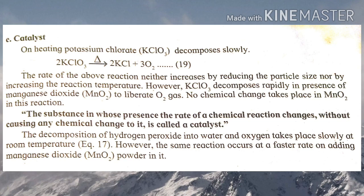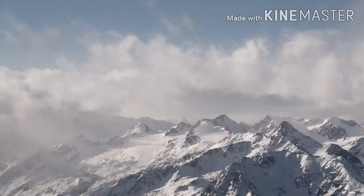Number five is catalyst. A catalyst is a substance whose presence changes the rate of a chemical reaction without itself undergoing any chemical change. For example, potassium chlorate decomposes rapidly in the presence of manganese dioxide to liberate oxygen. In this way, we have discussed all the factors affecting the rate of chemical reaction.